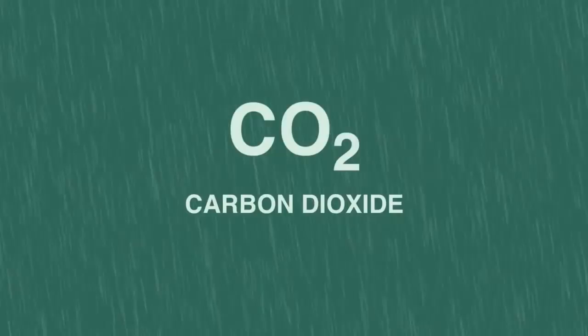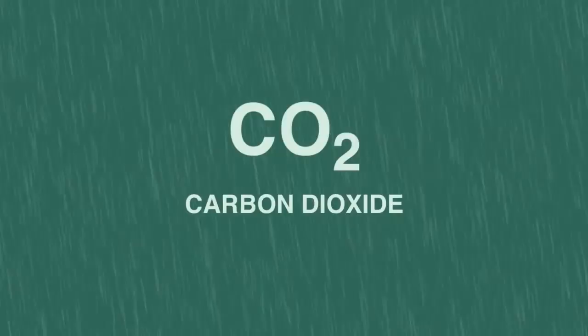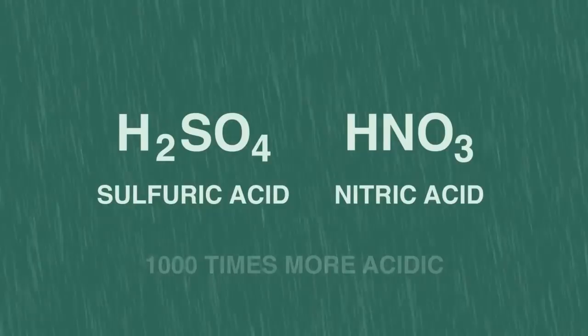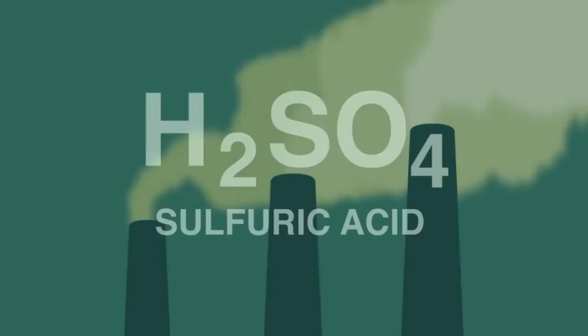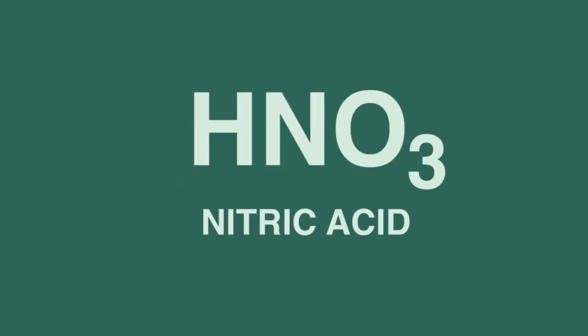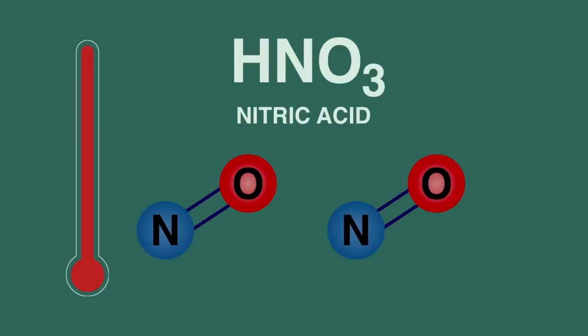So to summarize, normal rain is slightly acidic due to the dissolved carbon dioxide, but acid rain contains sulfuric and nitric acid, making the rain a thousand times more acidic and dangerous for many living things. Sulfuric acid arises from the burning of fossil fuels containing sulfur. Nitric acid arises from the combustion of atmospheric oxygen and nitrogen in the high temperature conditions in the cylinders of petrol and diesel engines.